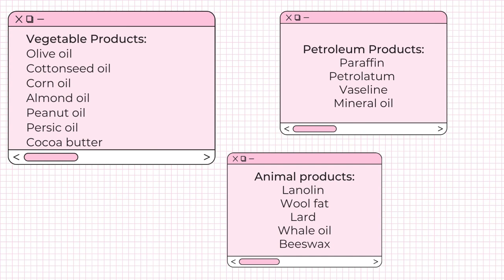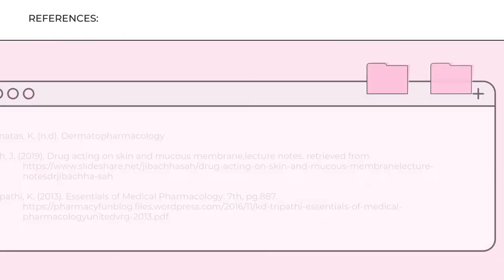In the animal products, it includes lanolin, wool fat, lard, whale oil, and beeswax.